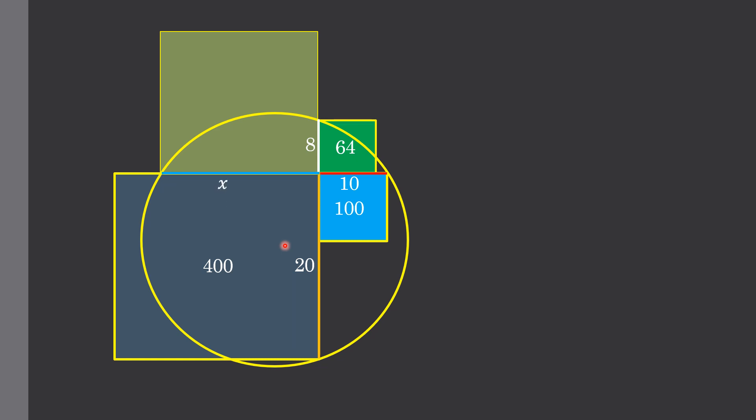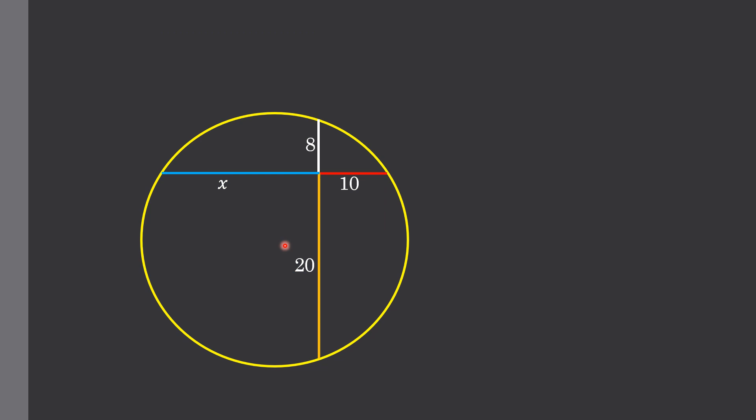Now we just take this chord into consideration and do some work. By chord-chord power theorem, we have 10 times x is equal to 8 times 20, and from here we can find that x is equal to 16 units.